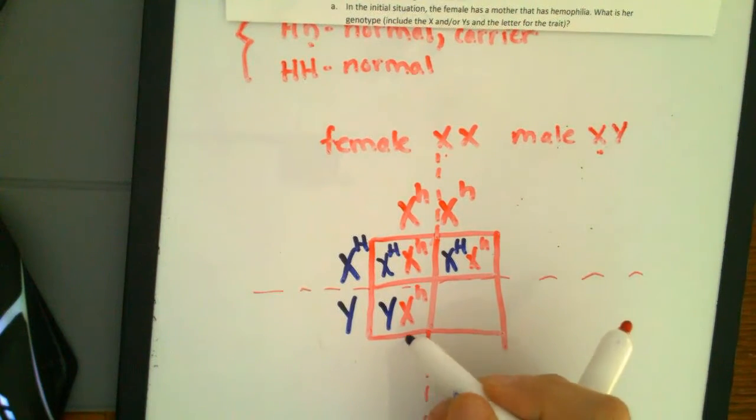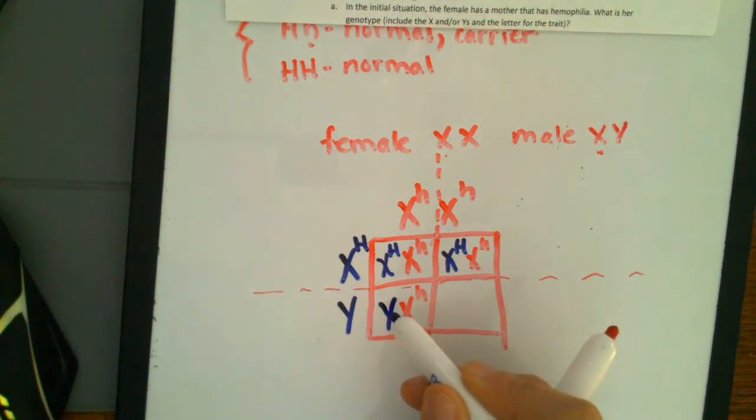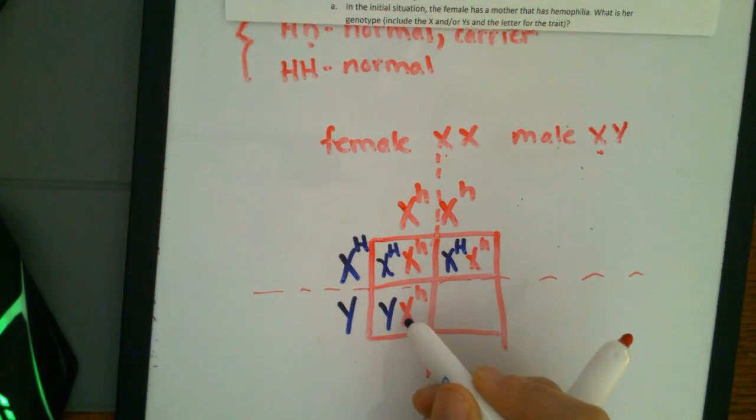Well, guess what? There's no big H to dominate or to mask over this disease allele, right? Because there's only one H here. There's nothing on the Y chromosome. So this would be a male that has the disorder.